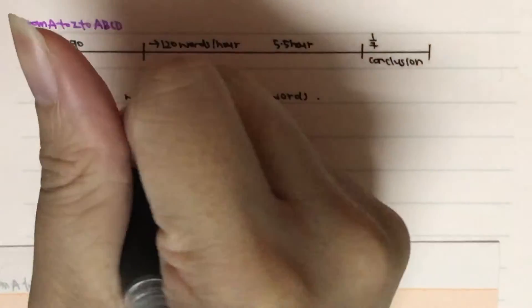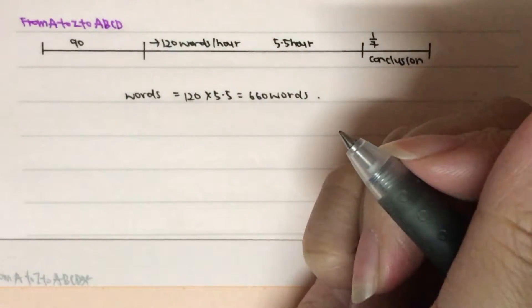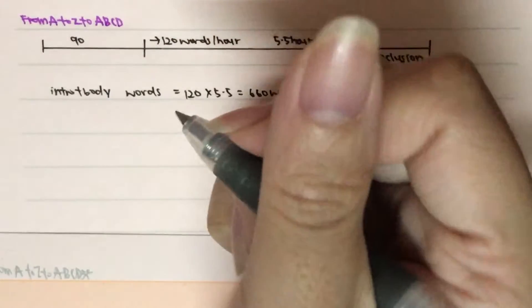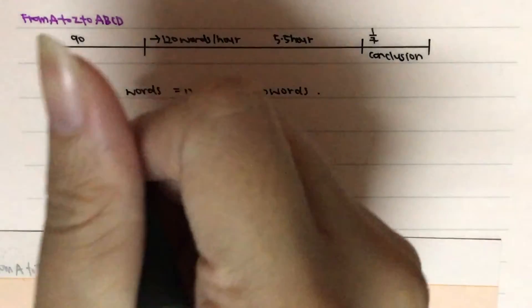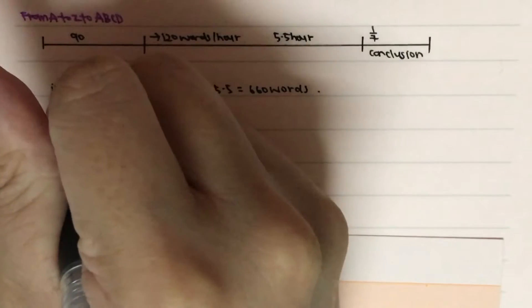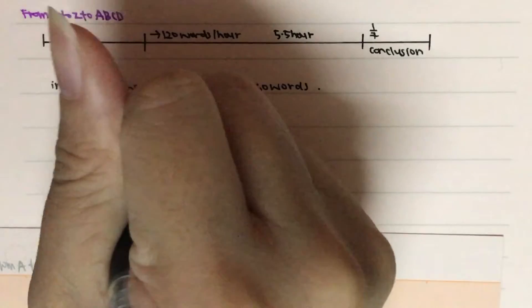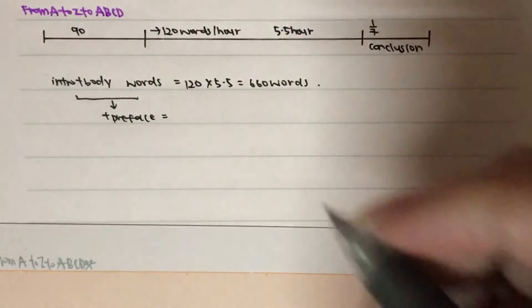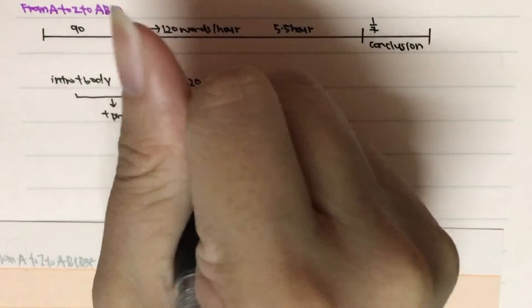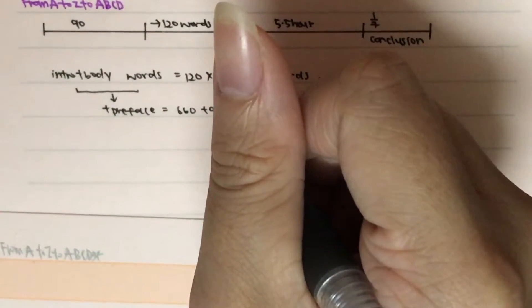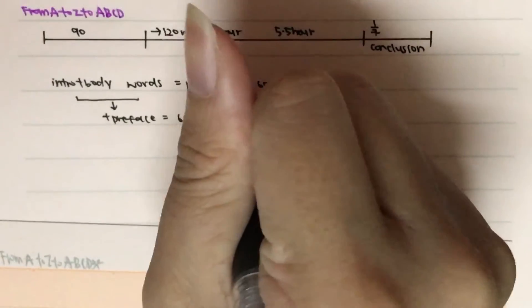Whereas the total essay that has been written, so this is just, let's just say as intro plus body. You know, introduction of your essay and the body of your essay. So let's say that this one equals to this total plus the preface, which is something that exists before your introduction. That's why we just add it in. You will just get 750 words.